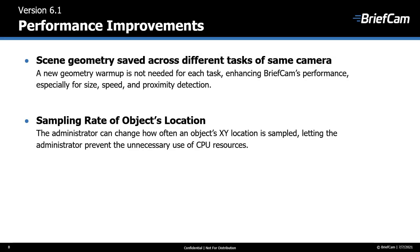In our constant endeavor to improve the performance of BriefCam, we've made some important enhancements. First, there's an improvement in how BriefCam works with the geometry of the scene. Scene geometry means that BriefCam analyzes the scene makeup such as the horizon and takes into account depth perception by analyzing changes in the size of people as they move across the scene. In the past, BriefCam calculated this geometry for each task; now it saves the scene geometry across different tasks on the same camera, which improves performance especially for size, speed, and proximity detection.